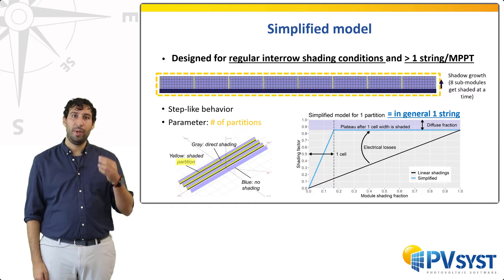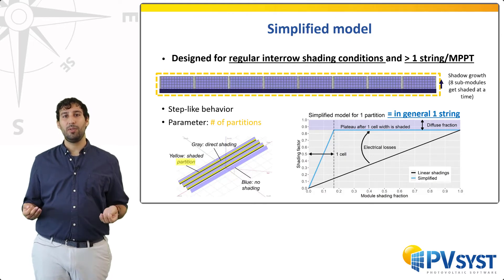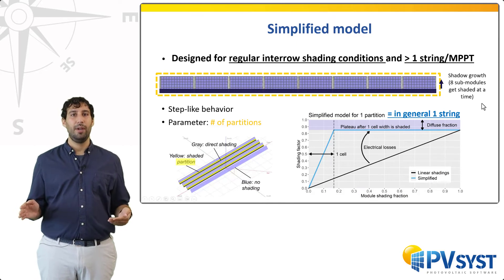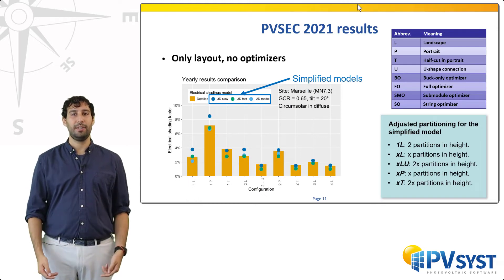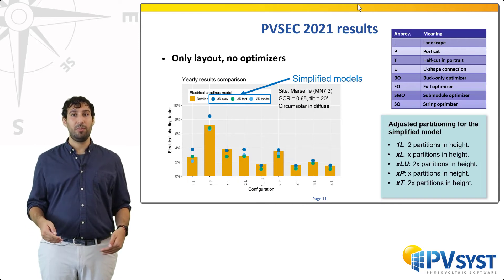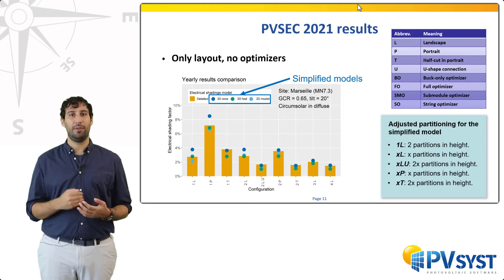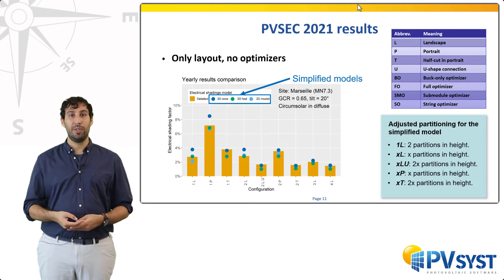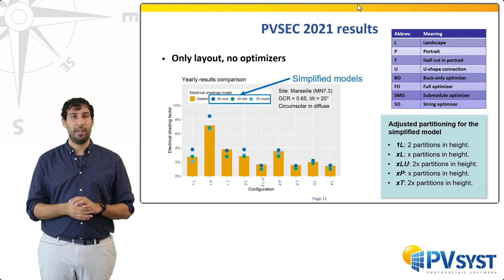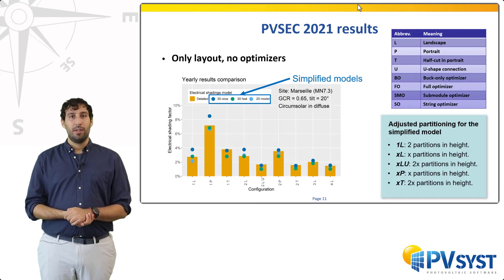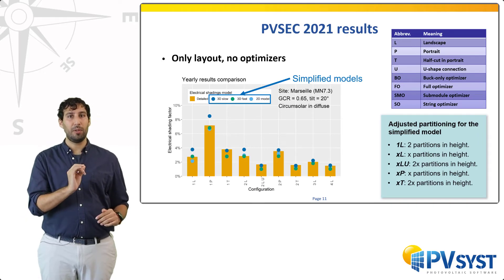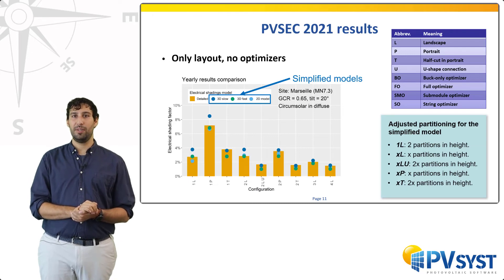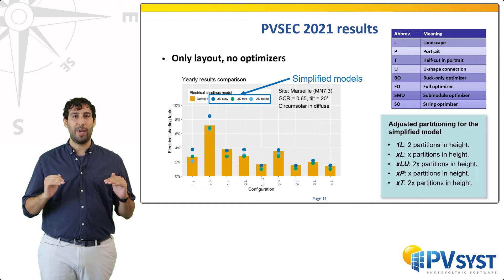At EU PVSEC 2021, we presented the following results. In these plots, we show the yearly electrical shading factor for different configurations shown as different bars. This electrical shading factor measures the mismatch caused by inter-row shadings throughout a year. All cases have been modeled with a GCR of 0.65 and a tilt of 20 degrees for a site in Southern France. In yellow, you see the results with the detailed module layout reference model. In blue and green dots, we also show the results using the simplified model. On the right, we present the number of partitions in the height of the table that will let the simplified model best match the reference for each case.